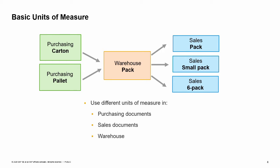Vendors sell the item in cartons or pallets, and we sell the paper in either packs, small packs, or groups of six packs. Each item master record holds the units of measure used for purchasing, storing, and selling that particular item. When you set up the item, you assign a group containing the units of measure commonly used for this type of item.